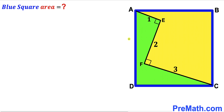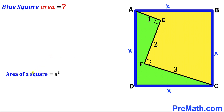Since we are dealing with blue square ABCD, let me label the side length as X, so all side lengths are X units. The area of a square is always S squared where S is the side length. Therefore, the blue square area is X squared.